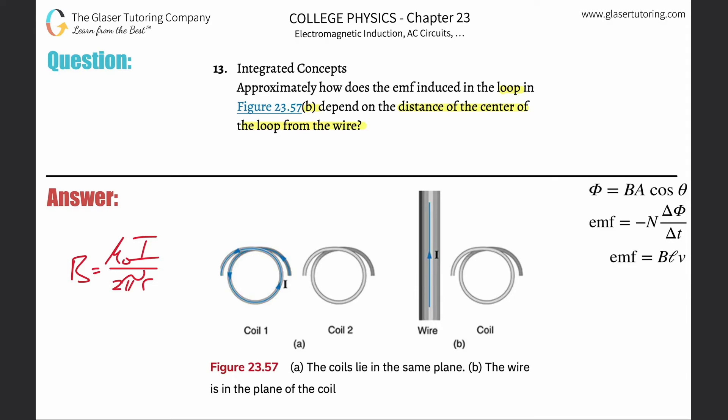So as the radius increases here, as the distance between the wire and the point of interest, the center of the coil, increases, then the magnetic field will go down. And therefore if the magnetic field here goes down, the change in magnetic flux will also be a little less, and therefore the emf will change as well.